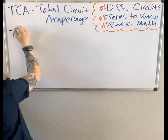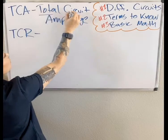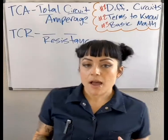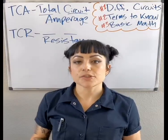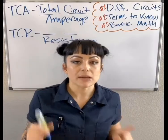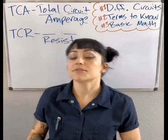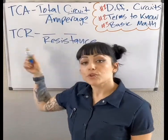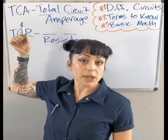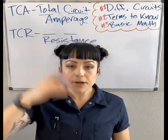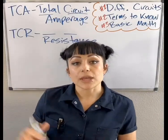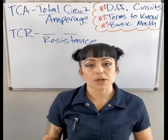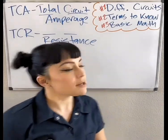Next is TCR — Total Circuit Resistance — meaning the resistance of the entire circuit. That's calculated differently depending on whether it's a series, parallel, or series-parallel circuit. The total circuit resistance determines how much amperage is going to be in the circuit. The higher the resistance in the circuit, the lower the amperage. The lower the resistance, the higher the amperage. I'll show you how those numbers get manipulated in a minute.